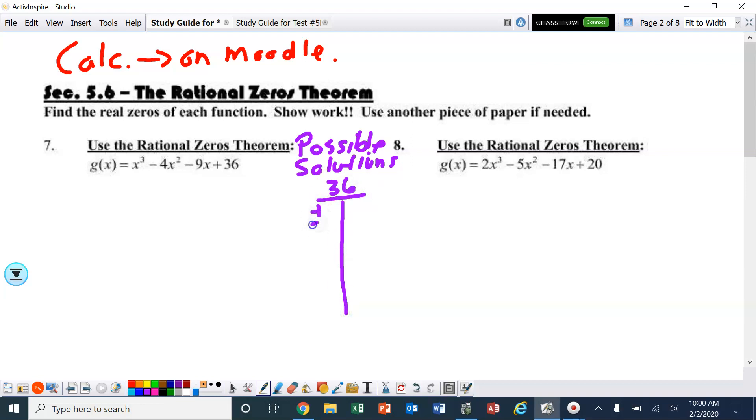To find possible solutions, I am going to take the constant and list out all the factors: ±1, ±36, ±2, ±18, ±3, ±12, ±4, ±9, and ±6. So those are all possible solutions to this problem.